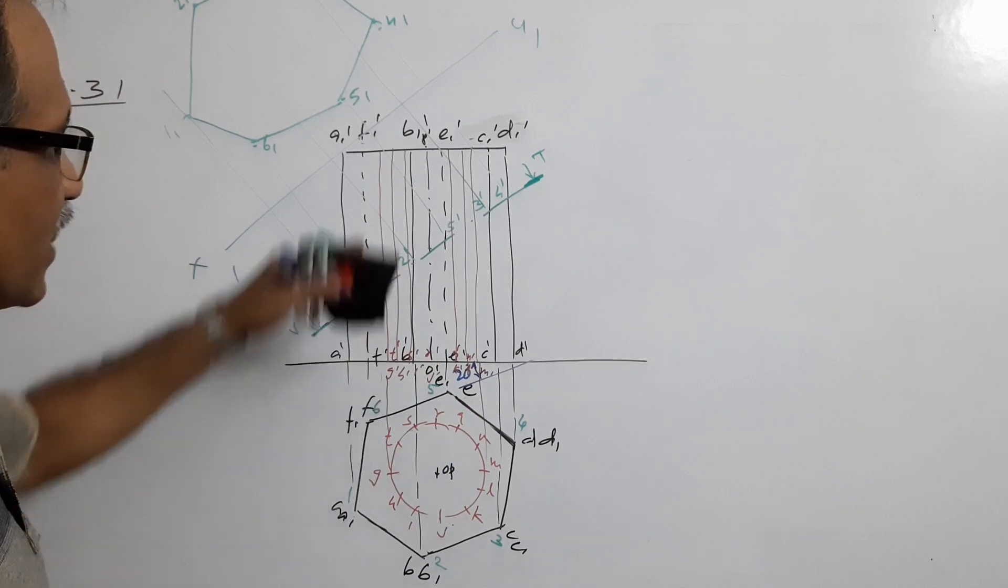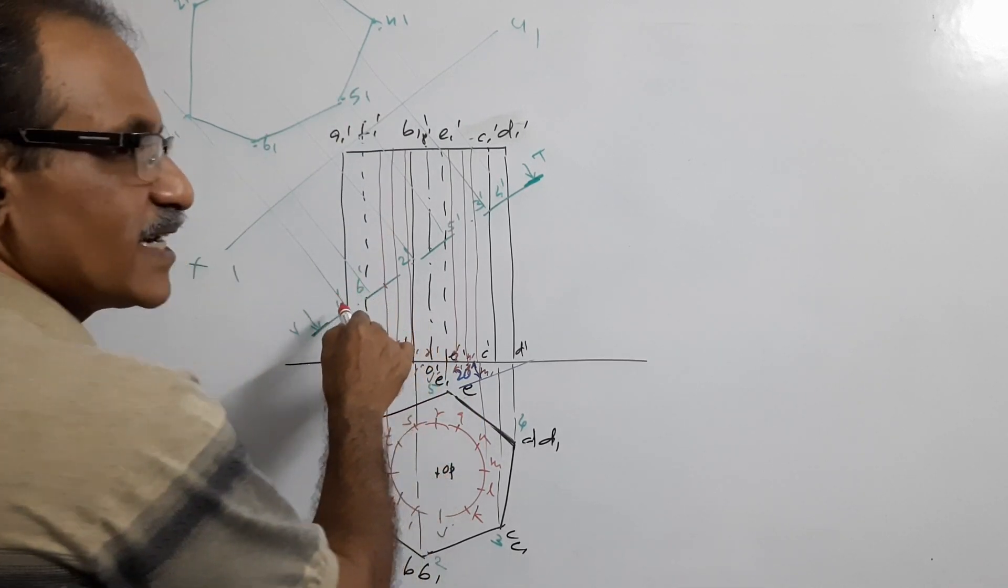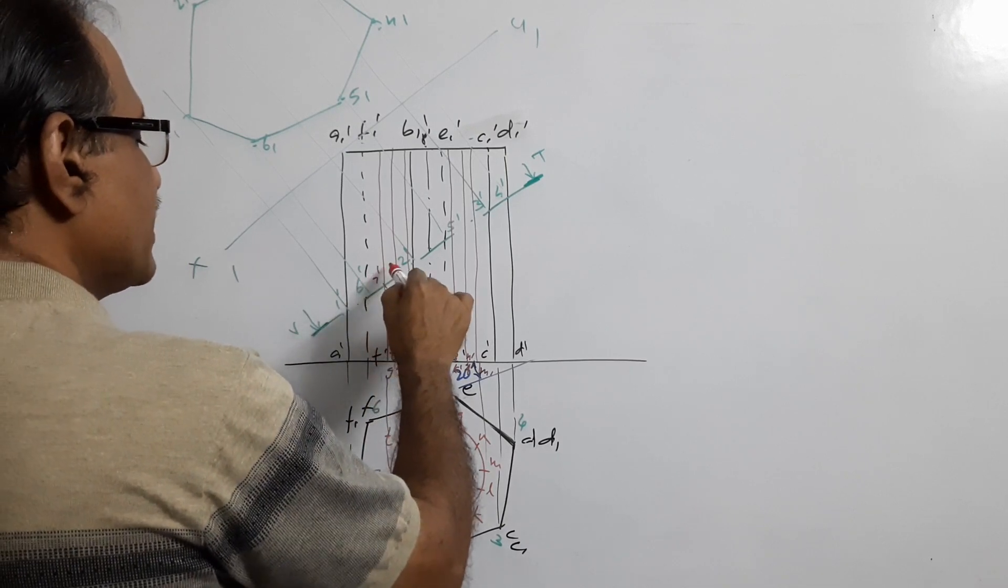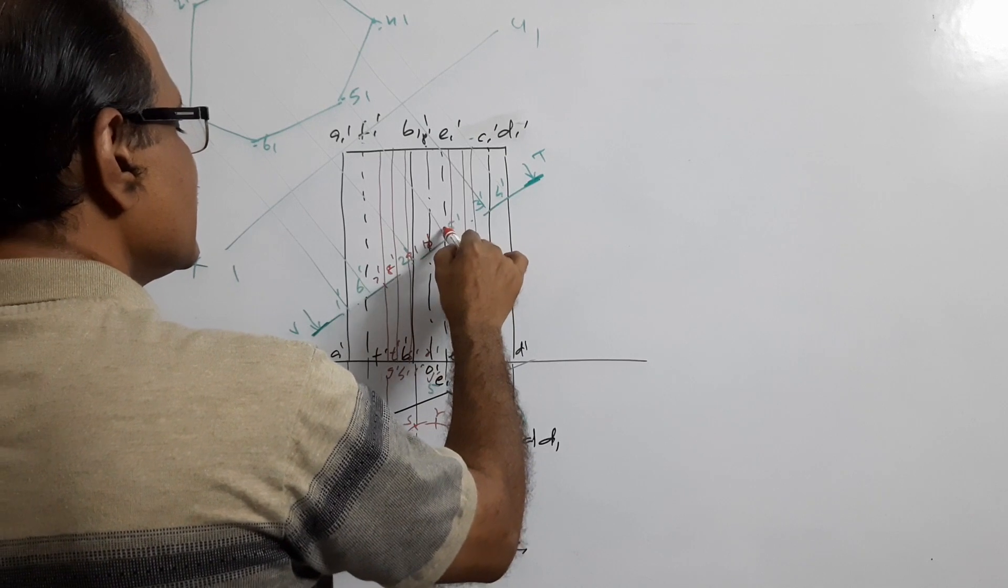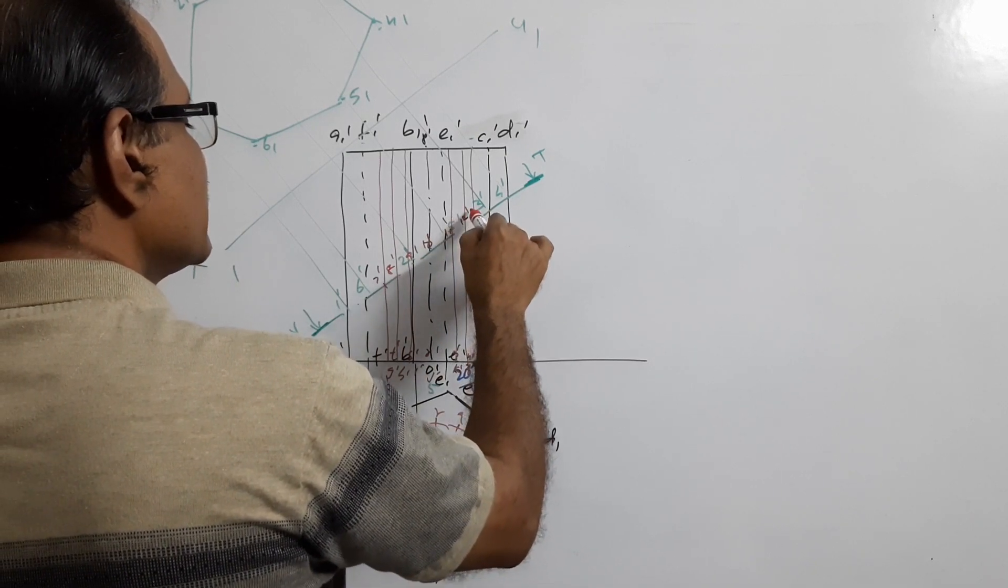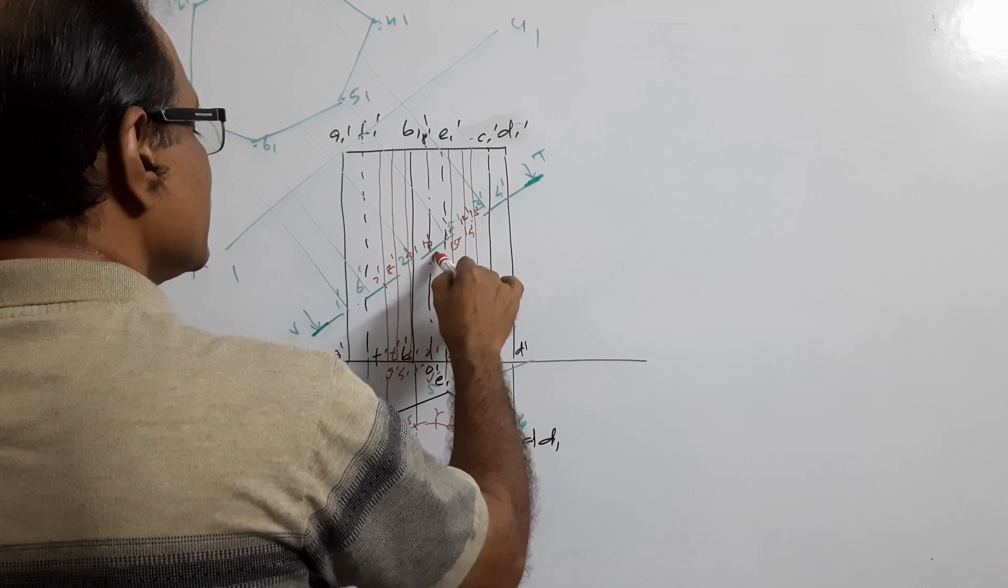I am not naming on the top. Now for the points on the cutting plane, we have used up to 6 dash. Label the hole intersection points as 7 dash, 8 dash, 9 dash, 10 dash, 11 dash, 12 dash, 13 dash, 14 dash, 15 dash, 16 dash, 17 dash, 18 dash—12 points total.